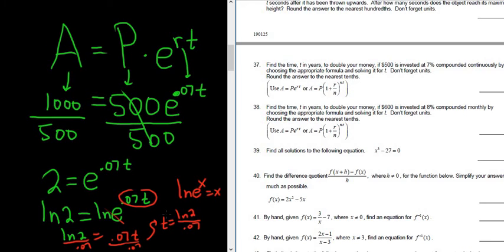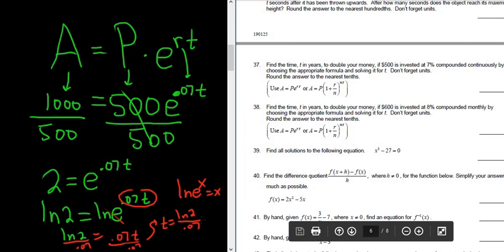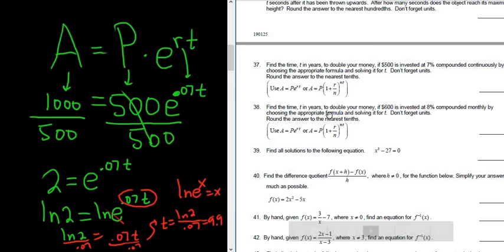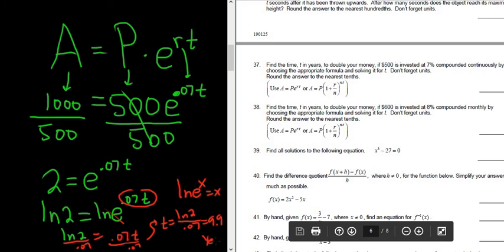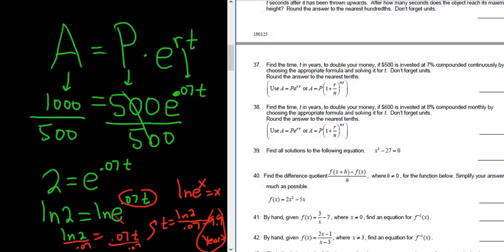So let's see, I'm going to type it in: ln 2 divided by 0.07. I got 9.90. Tenths is one decimal, so 9.9. And the units are years. So the answer is 9.9 years, and that is the final answer.